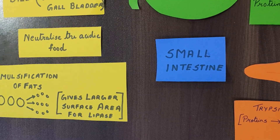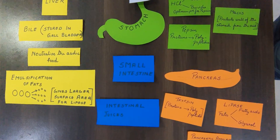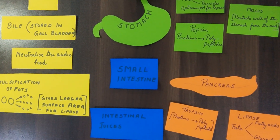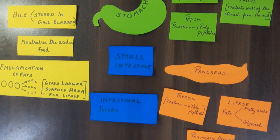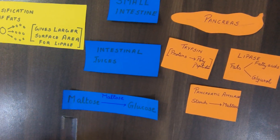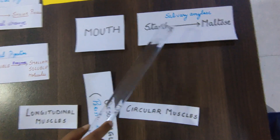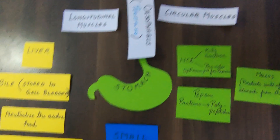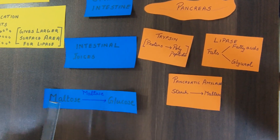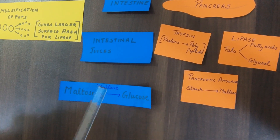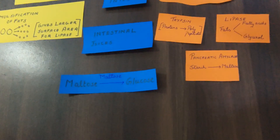The small intestine also secretes intestinal juices, which consist of enzymes that break down polypeptides to amino acids. There are also lipases which convert fats to fatty acids, and an enzyme called maltase which converts maltose to glucose. Maltose is a disaccharide that must be converted to a monosaccharide — glucose — in the presence of maltase. These are the different enzymes which act on food during the process of digestion.